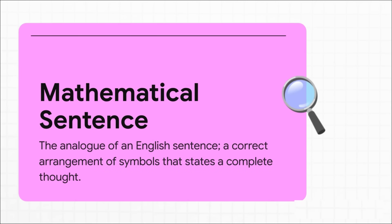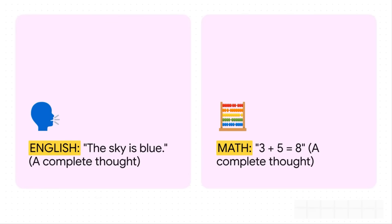Just like in English class, a sentence in math is a correct arrangement of symbols that actually states a complete thought. It's making a claim. And check out this comparison. It makes it so clear. In English, we say, the sky is blue. That's a complete thought. It's making a claim. In math, three plus five equals eight does the exact same thing. It takes two expressions, three plus five and eight, and connects them with a verb, the equal sign, to make a full statement.